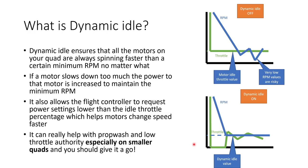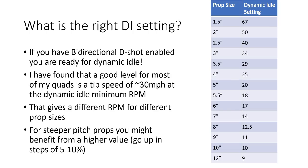Dynamic idle can really help with prop wash and low throttle authority, especially on smaller quads, so you should definitely give it a go. If you have bi-directional D-Shot enabled, you are ready for dynamic idle. If not, I'll put a link in the video description to instructions on how to activate it. Propeller tip speed is the scaling law for dynamic idle, and I've found that a good level for most quads is a tip speed of about 30 miles per hour at the dynamic idle minimum RPM. That gives a different RPM for different prop sizes, so I've produced a table where you can look up your prop size and find a suitable dynamic idle setting.